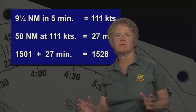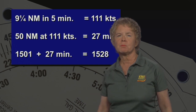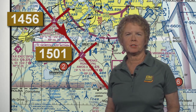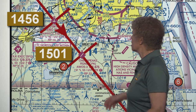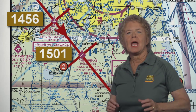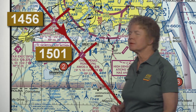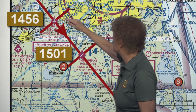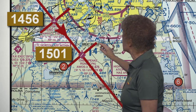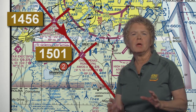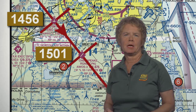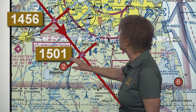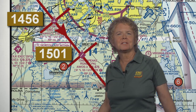Now, let's talk about a very common mistake. It is very common when working on this kind of problem to accidentally and erroneously add the remaining time en route — the 27 minutes — to the wrong time. A lot of people will add it to the time over the first checkpoint instead of correctly adding it to the time over the second checkpoint. Make sure you use the latest time fix. Add the 27 minutes to the time over Chesapeake Airport, the 15:01 that you crossed Chesapeake at. Nothing to it.